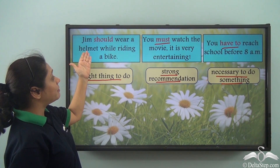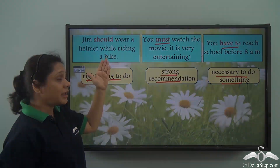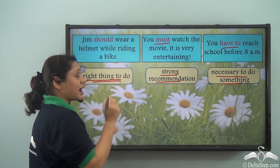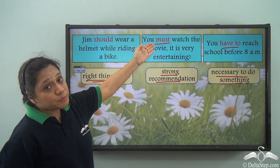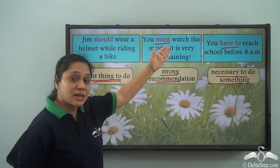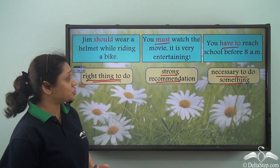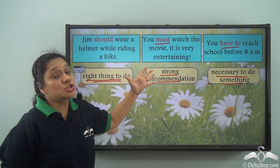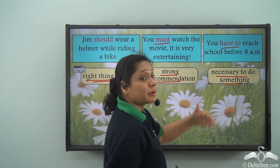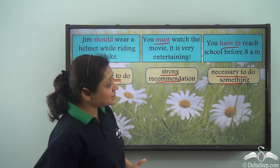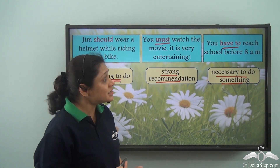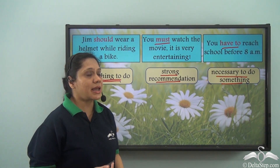'Jim should wear a helmet while riding a bike' is showing an advice or a suggestion — it tells us the right thing to do. 'You must watch the movie' is also showing a suggestion, but in this case it is a strong recommendation. 'You have to reach school before 8 am' is telling us that it is necessary to do something.